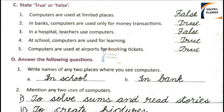Number 2: In banks, computers are used only for money transactions. This is correct, so we write True. Number 3: In a hospital, teachers use computers. This statement is wrong, so we write False.